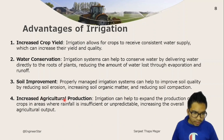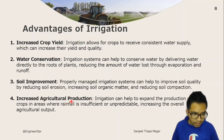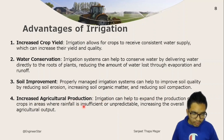Irrigation also increases agricultural production. Irrigation can help to expand the production of crops in areas where rainfall is insufficient or unpredictable, increasing the overall agricultural output.